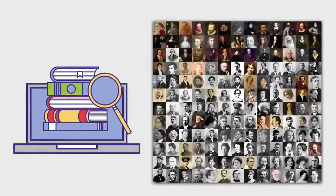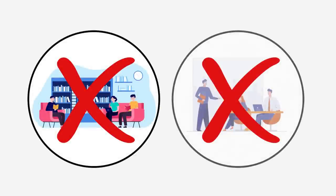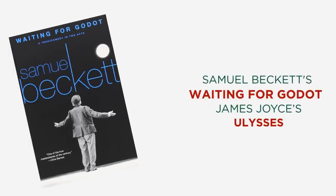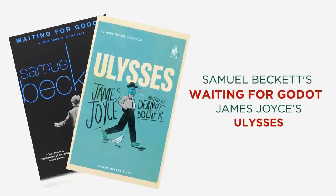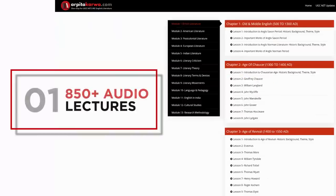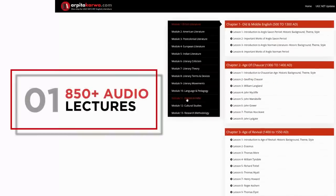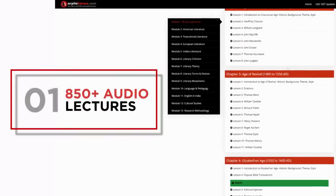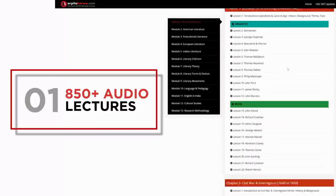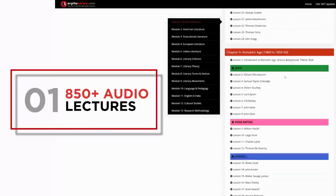The UGC NET exam syllabus is exhaustive and includes over 700 writers and 2000 plus texts. There is neither any guidebook nor any coaching platform in the market that provides an end-to-end preparation model for this exam. Be it Samuel Beckett's Waiting for Godot or complex texts like James Joyce's Ulysses, we are the only coaching platform in India to cover the exhaustive syllabus of UGC NET English in a precise manner through a series of 850 plus lectures.